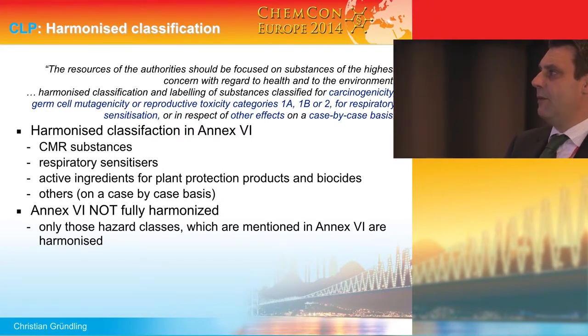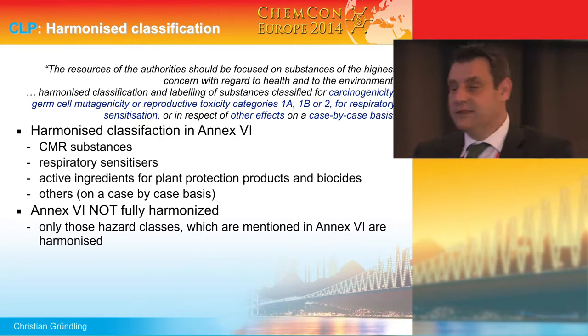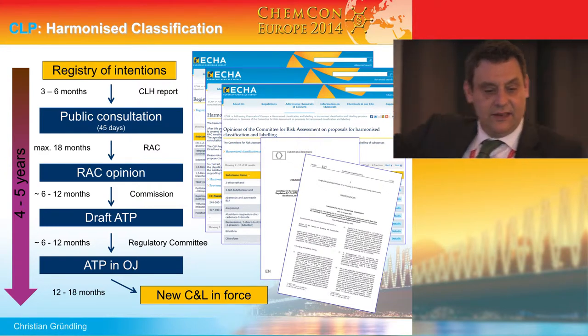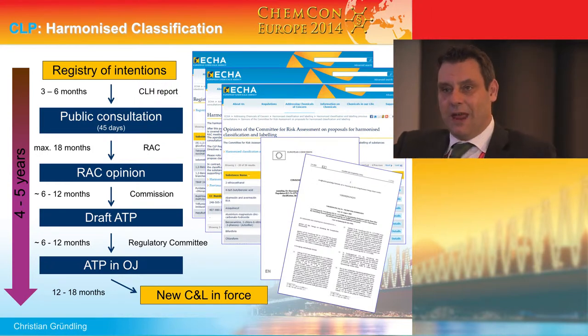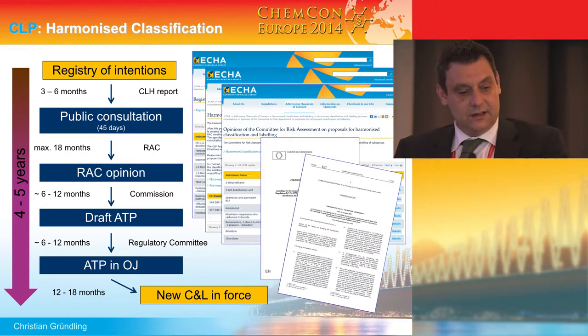The harmonized classification should primarily apply for CMR substances. It should apply for respiratory sensitizers, for all active ingredients for plant protection products and biocidal products, and for other endpoints on a case-by-case basis. Please bear in mind that Annex 6 does not fully harmonize the classification of a single substance — it just harmonizes those endpoints mentioned there. Some downstream legislation refers to Annex 6 of the CLP classification, and there you have direct risk management measures once a substance is classified as CMR and included in Annex 6 of the CLP regulation.